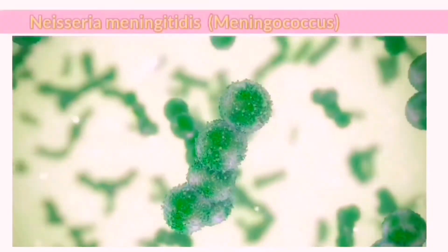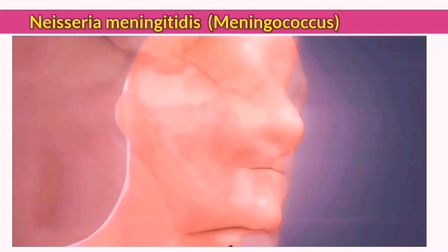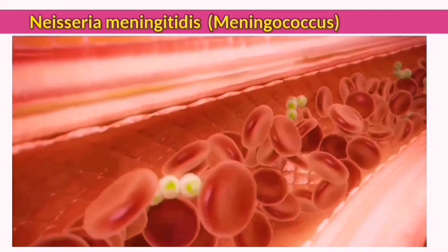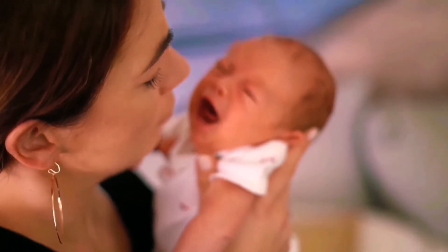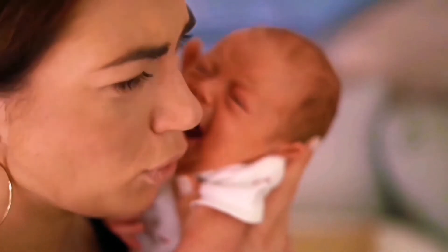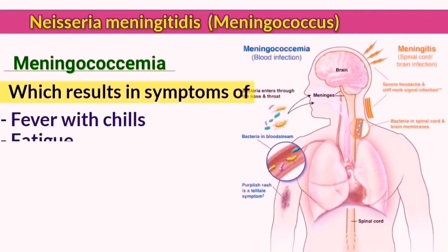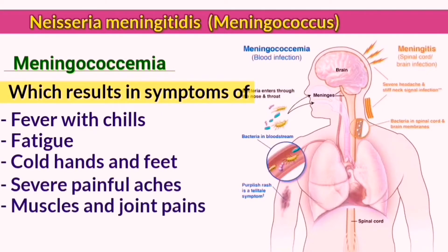Meningococcemia or meningococcal septicemia is a rare but very dangerous infection which damages the epithelium of the blood vessels and causes bleeding in the skin and other organs. It is similarly transmitted through coughing, sneezing, and kissing, especially in young infants. The symptoms of meningococcemia include fever with chills, fatigue, cold hands and feet, rash, and muscle and joint pains.